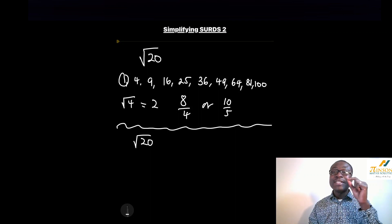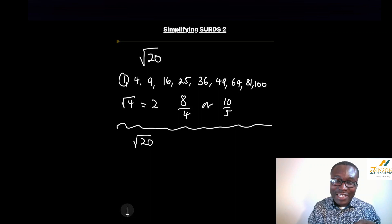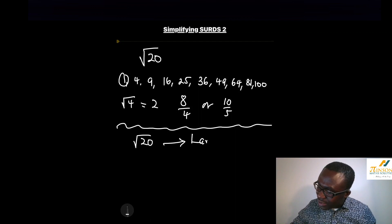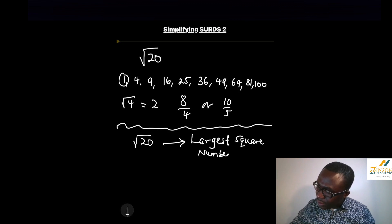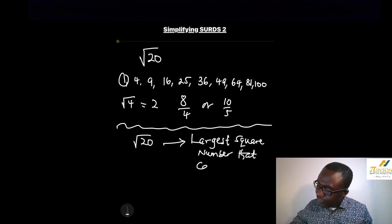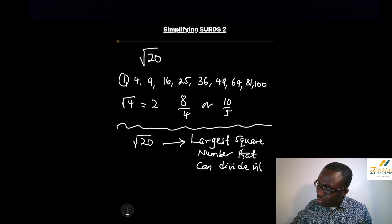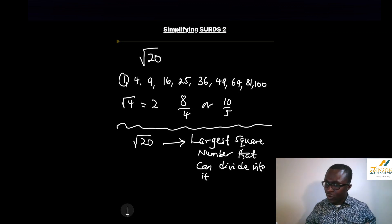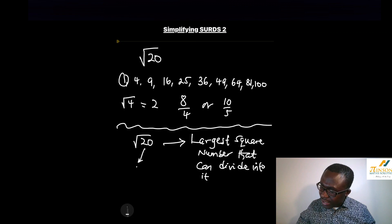Here's the secret: when simplifying a surd, you need to find the largest square number that can divide into it. That's the key step — find the largest square number that divides in. For square root of 20, what is the largest square number that divides into 20? It's 4.